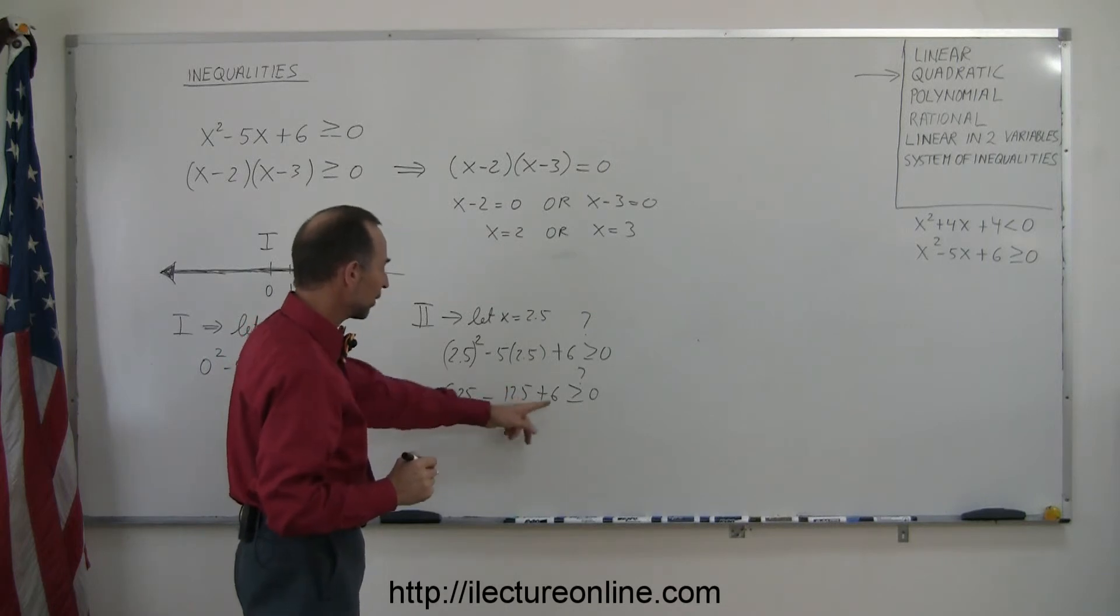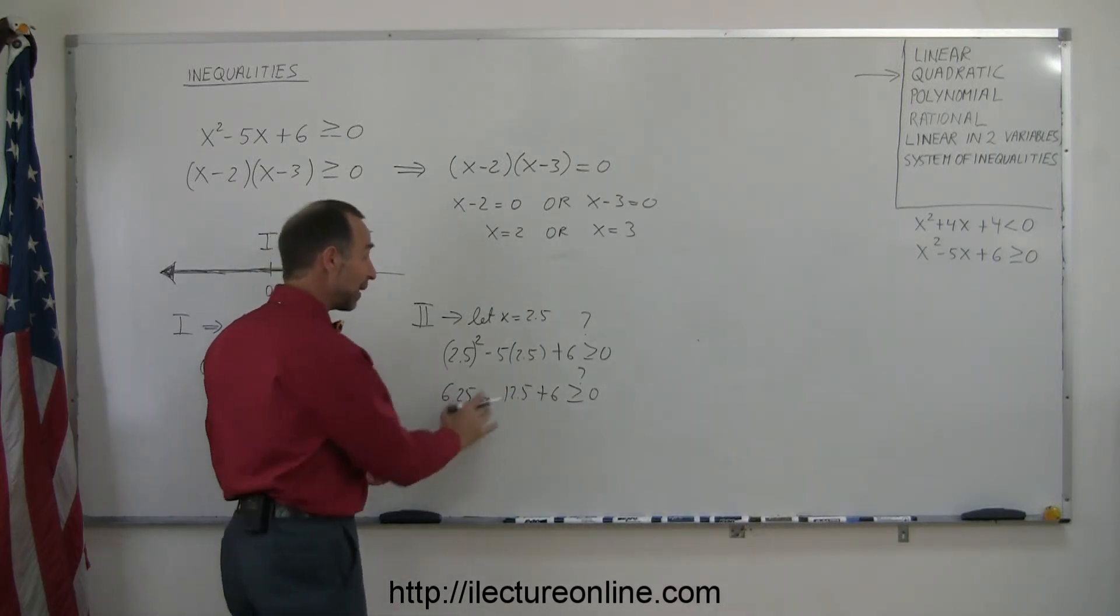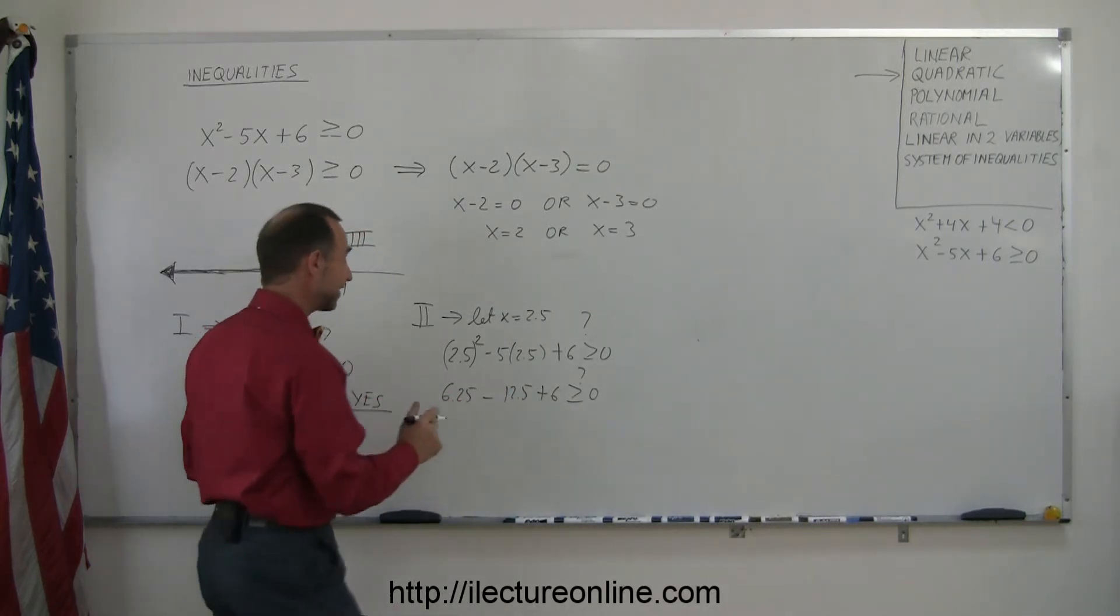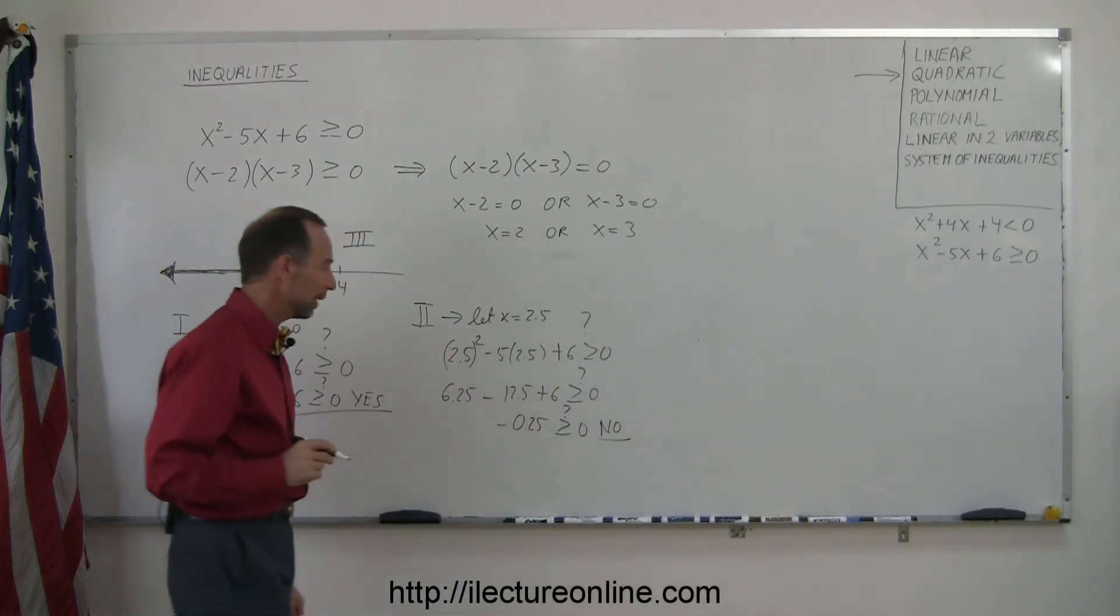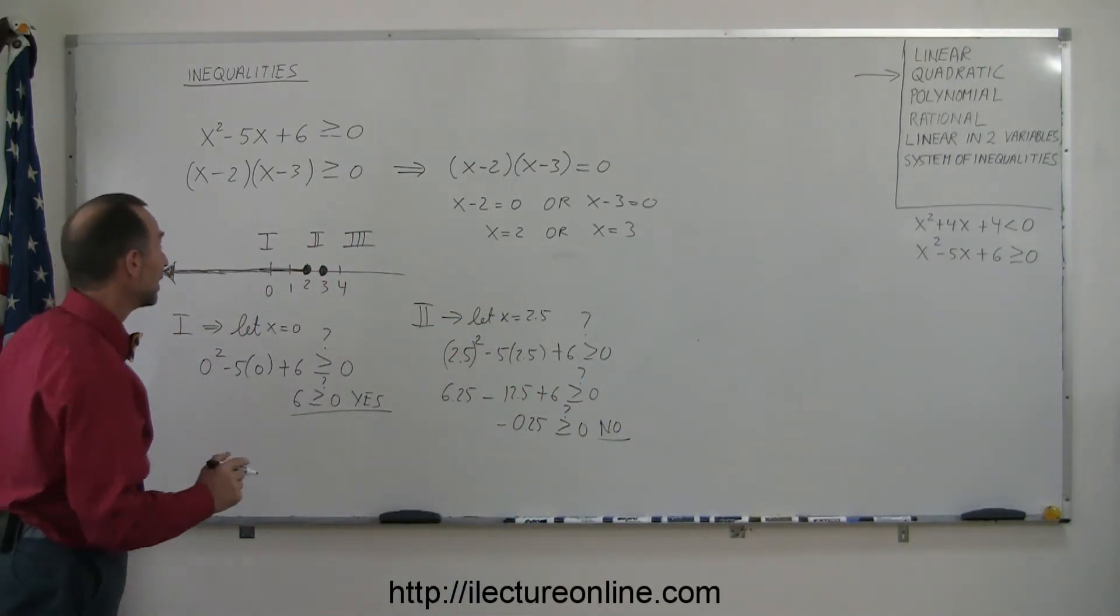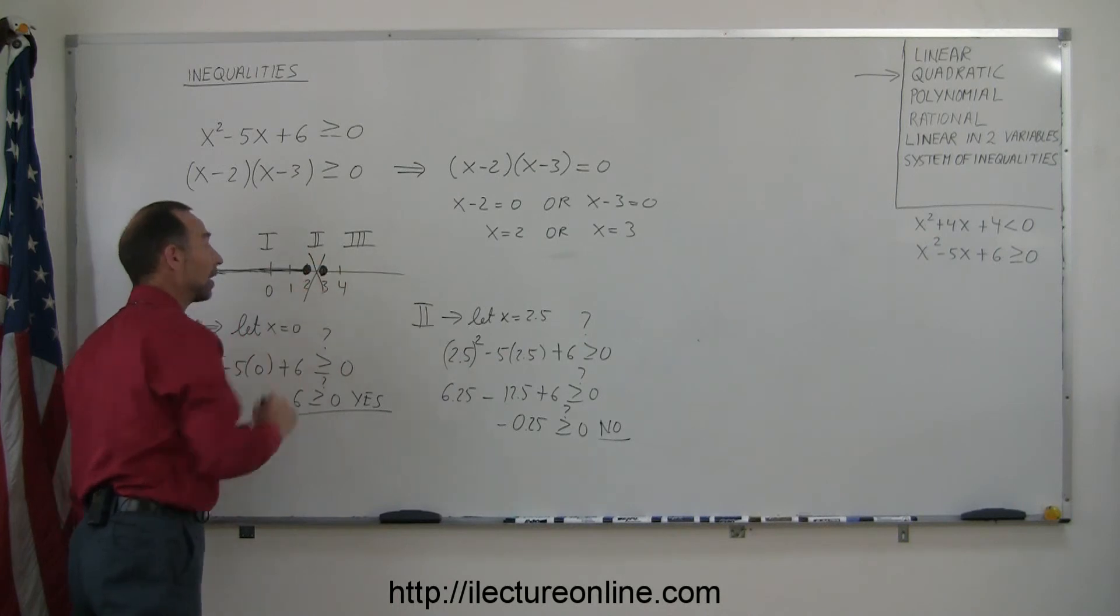Well, 6.25 + 6 is 12.25. Minus 12.5, that's less than 0. Because 0 - 0.25 is not greater than 0. That's a no, a negative. That means this region here is not part of the solution.